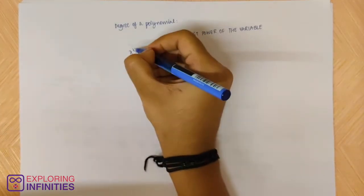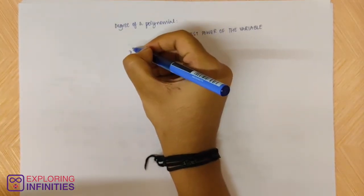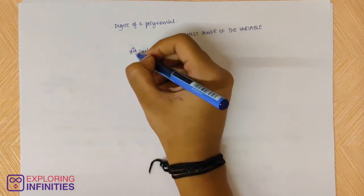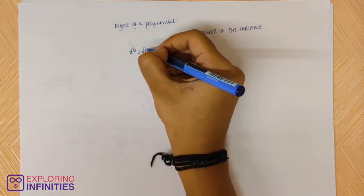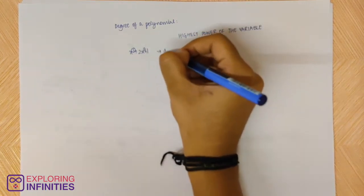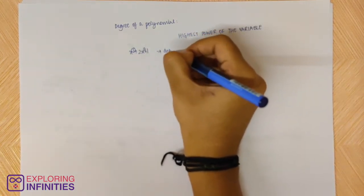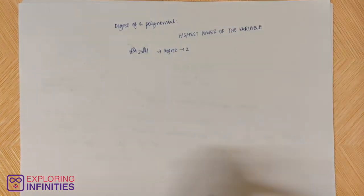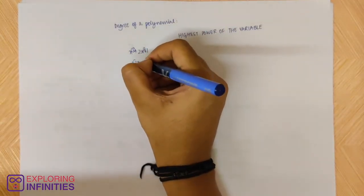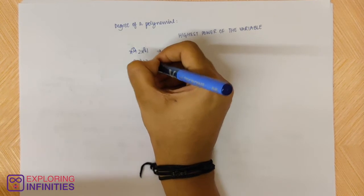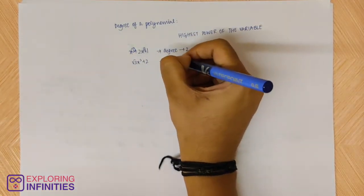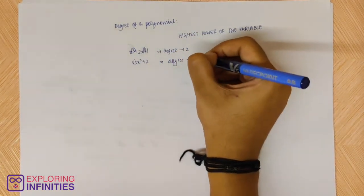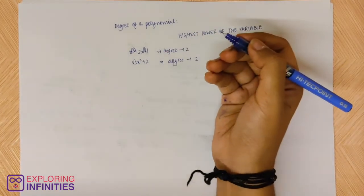Here x is to the power 2 — that is the highest power of x, since the other power here is 1. So the degree will be 2. For root 3 · x² + 2, the degree will also be 2, because there is only one term of x and the power of that term is 2.